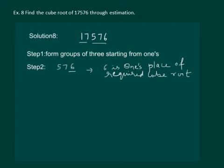Now, in step 3, we have to take the other group that is 17. Then, we have to find the cube root or the numbers whose cube root is near to 17. We know that 2 cube is 8 and 3 cube is 27.